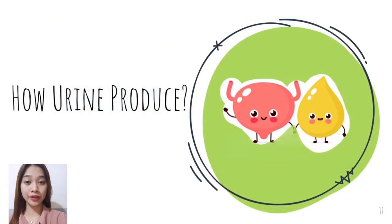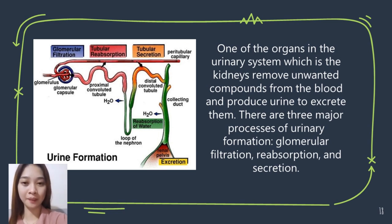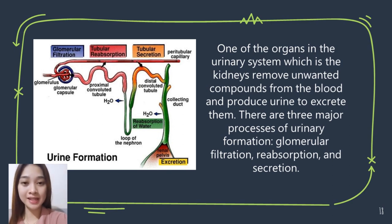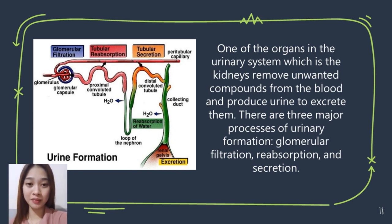Did you know how urine is formed and produced? The kidneys remove unwanted compounds from the blood and produce urine for excretion. Filtration, reabsorption, and secretion are the three major processes of urine formation. These procedures ensure that only waste and excess water are collected and removed from the body.